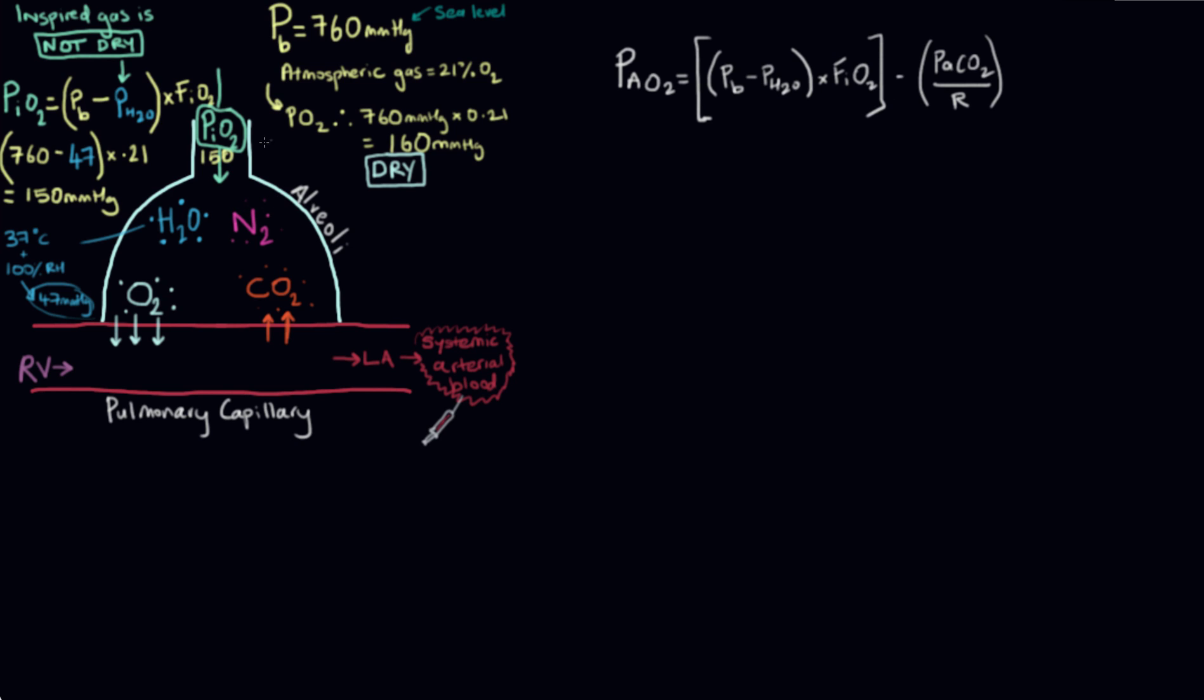So then we stopped there and said we'll pick up the alveolar air equation, because what we're trying to figure out is the partial pressure of oxygen in the alveolar space. And we said that it's about more than just this partial pressure of inspired oxygen, because once we get into the alveoli, gas exchange takes place. Oxygen is taken into the pulmonary capillaries and CO2 is released, and that CO2 is going to start exerting a pressure once it gets into the alveolar space.